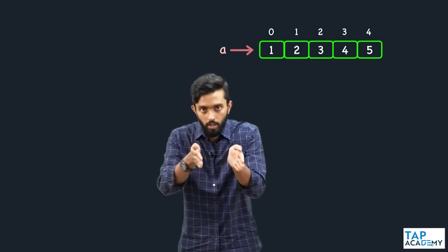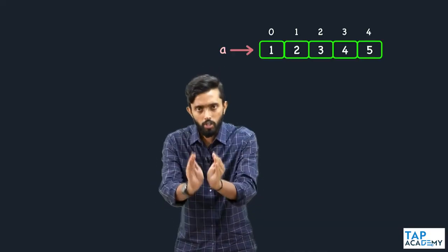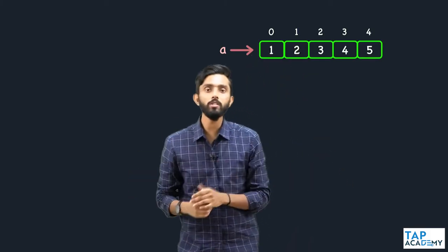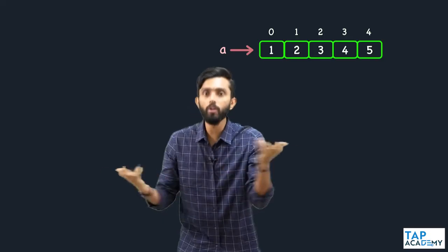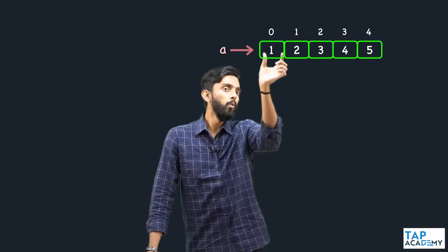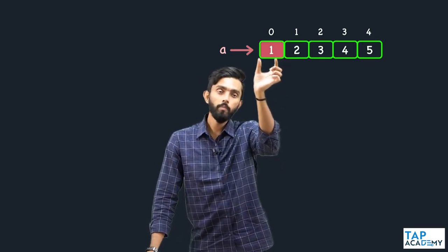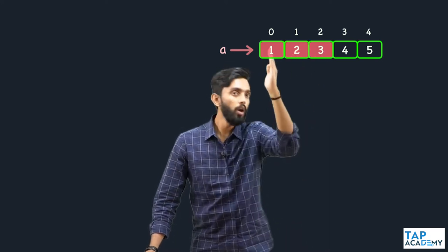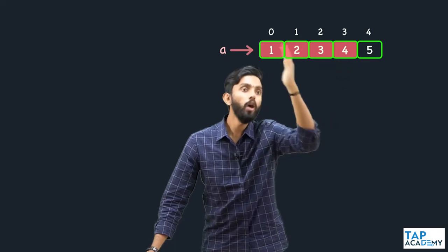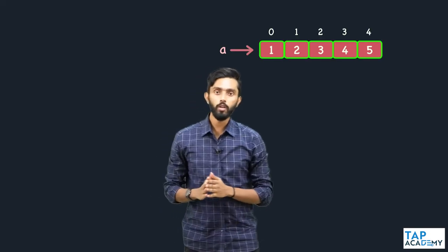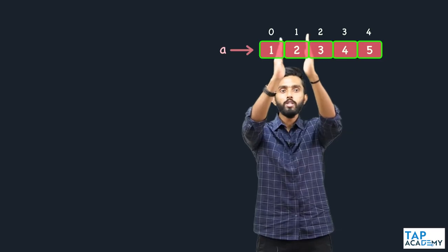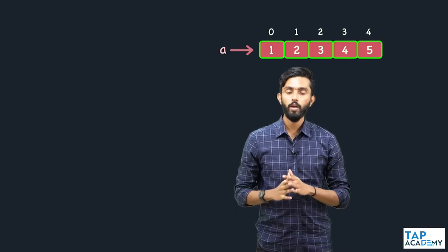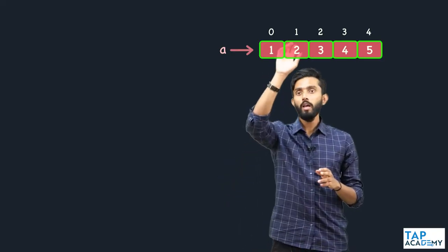Sub means a small part — a small part of an array is only called a sub array. For example, 1 is a sub array, 1 2 is a sub array, 1 2 3 is a sub array, 1 2 3 4 is a sub array, and 1 2 3 4 5 is also a sub array. Similarly, 2 is a sub array, 2 3 is a sub array, 2 3 4 is a sub array, and 2 3 4 5 is also a sub array.